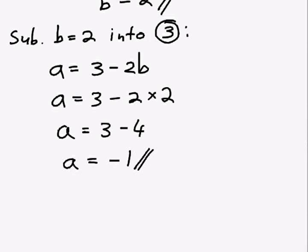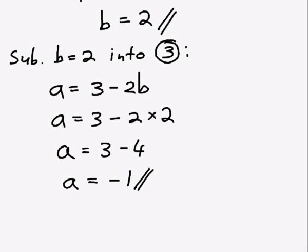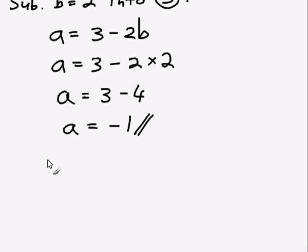So just to summarize our answer, for both a and b we can write that a equals negative 1 and b equals 2. And do a little double line to show it's our answer.